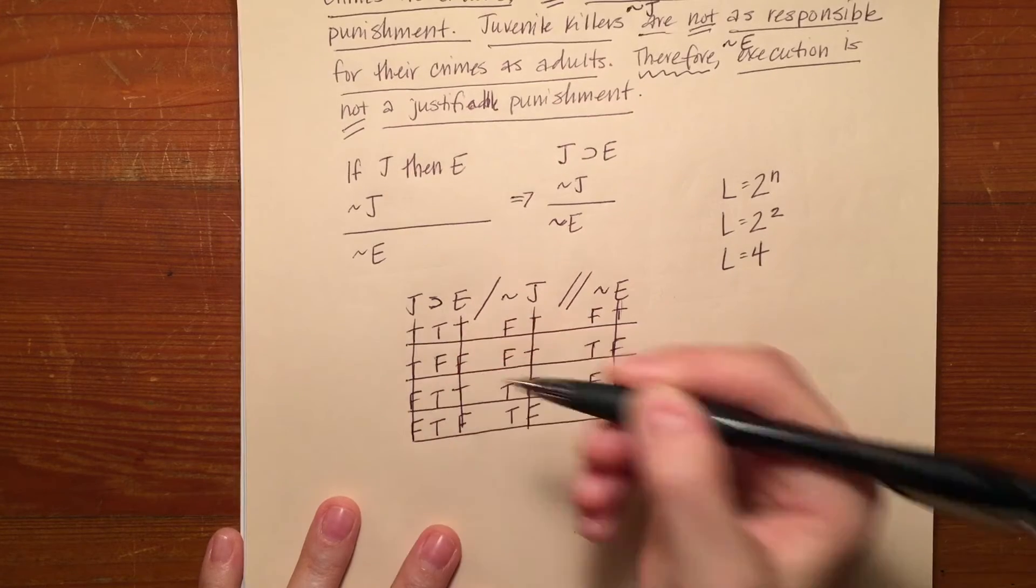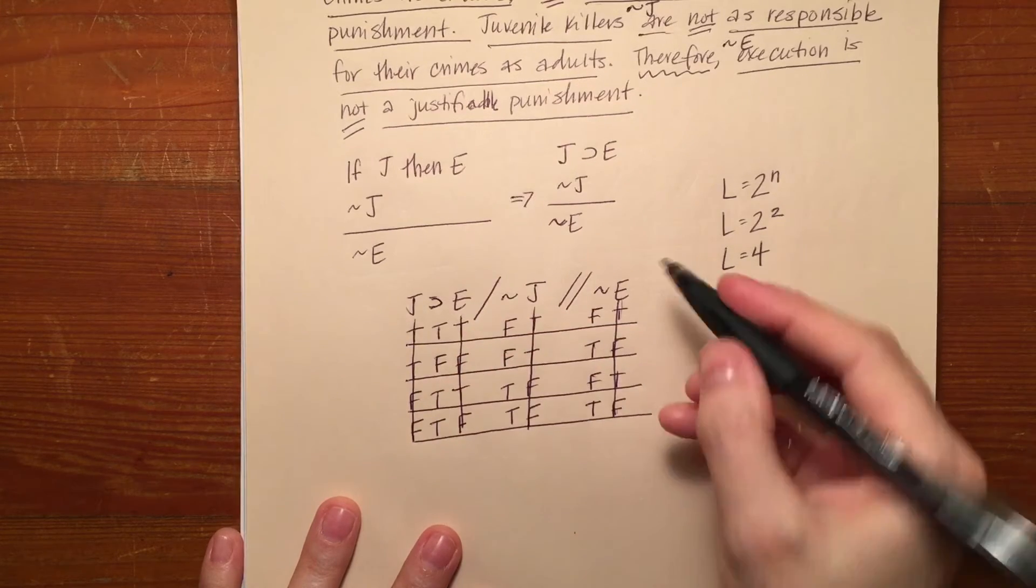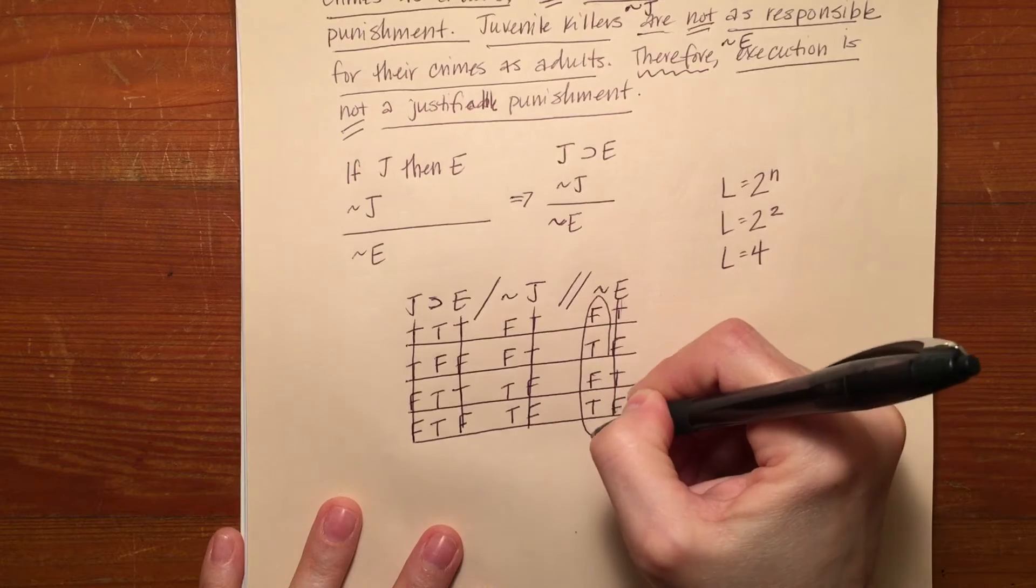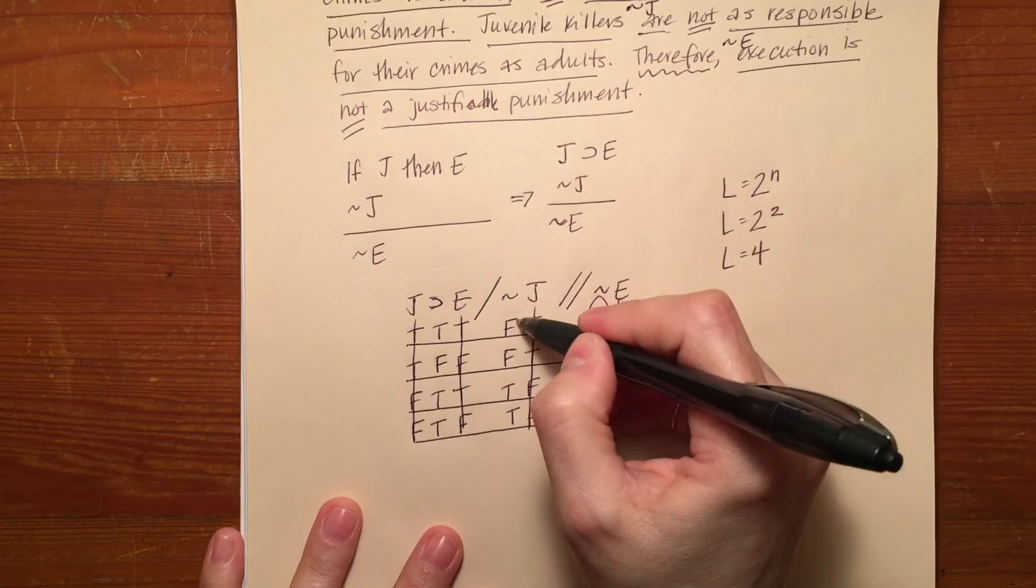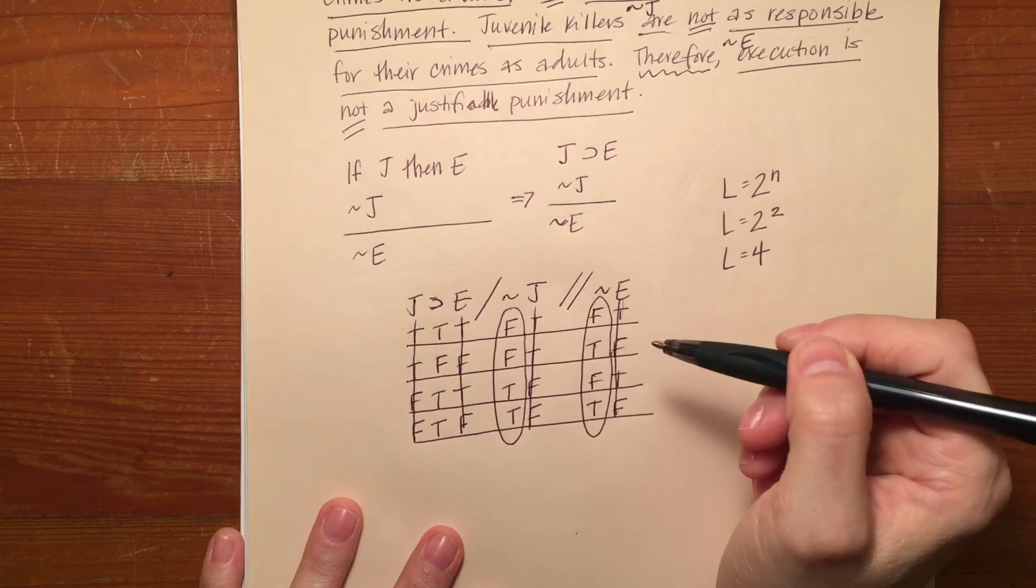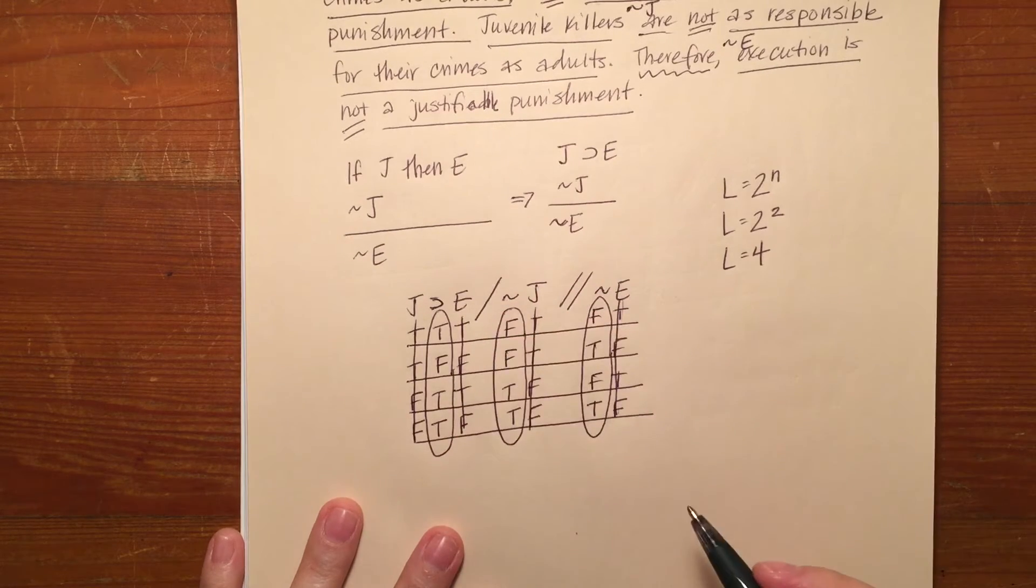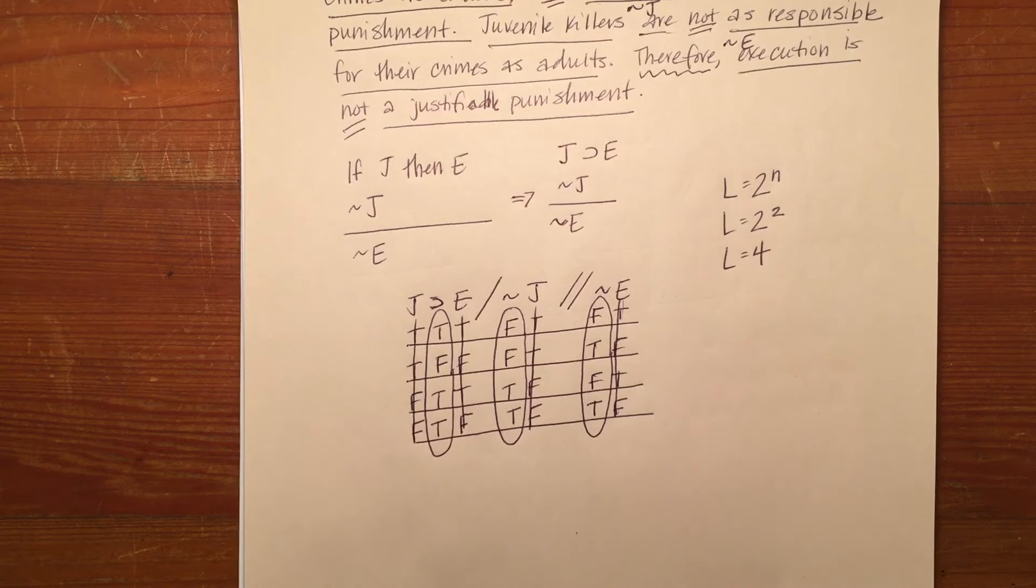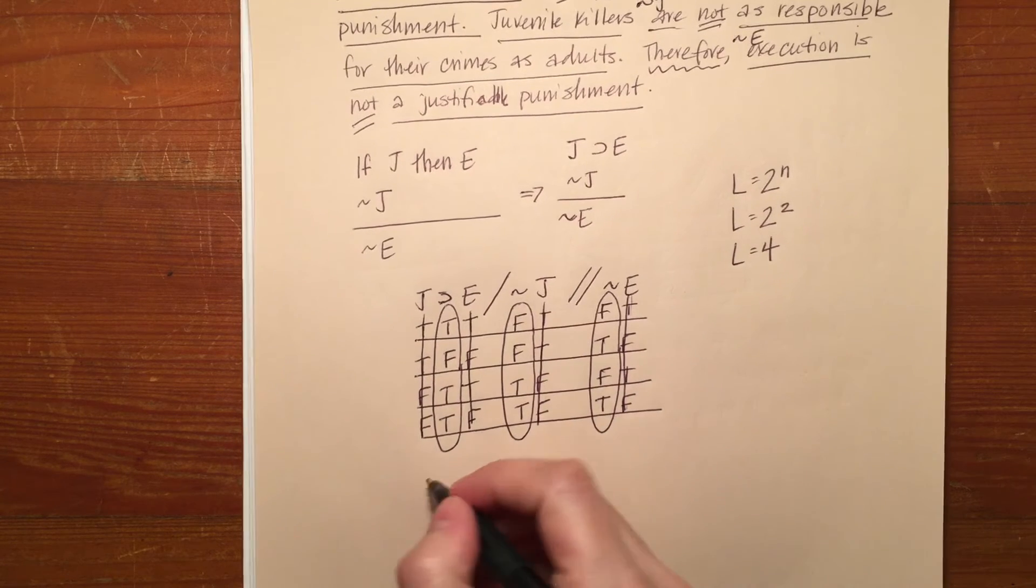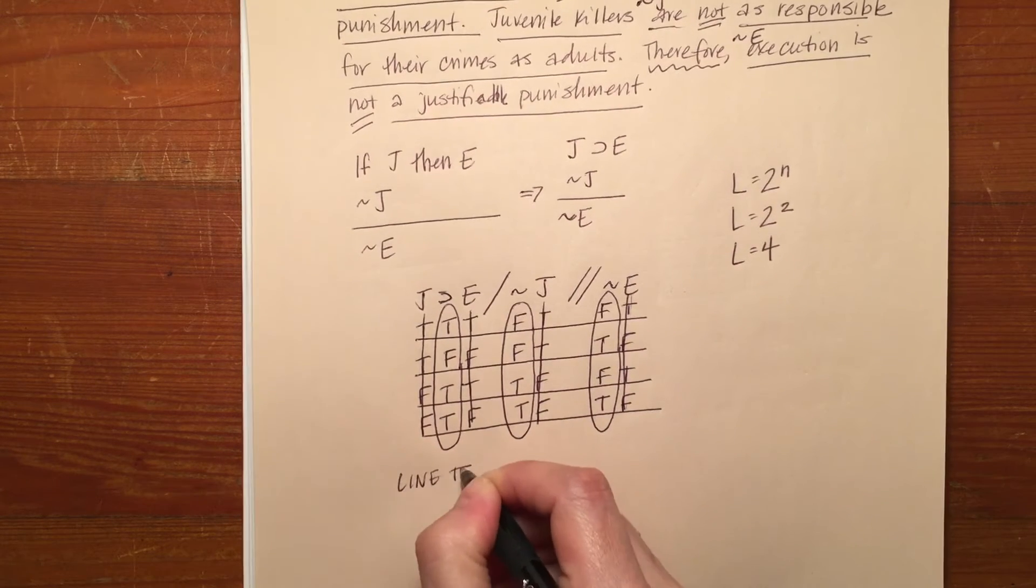And I'm done with these two. So what I'm left with is my conclusion. That's the answer for my conclusion. I also have the answer for the second premise and the answer for this third premise. And what I'm going to do is I'm going to use what is again called the line test.